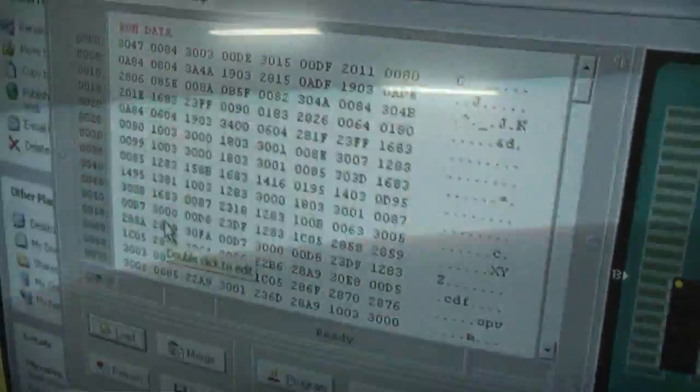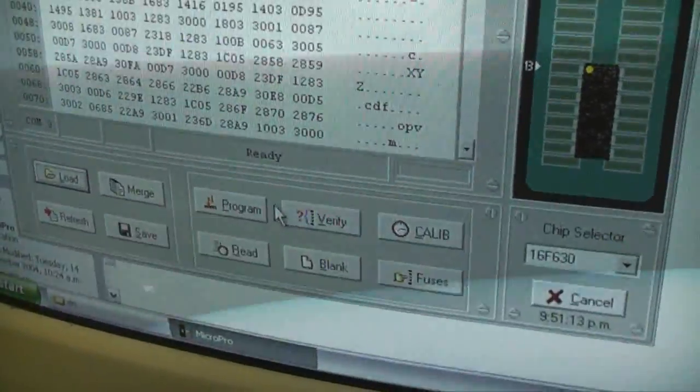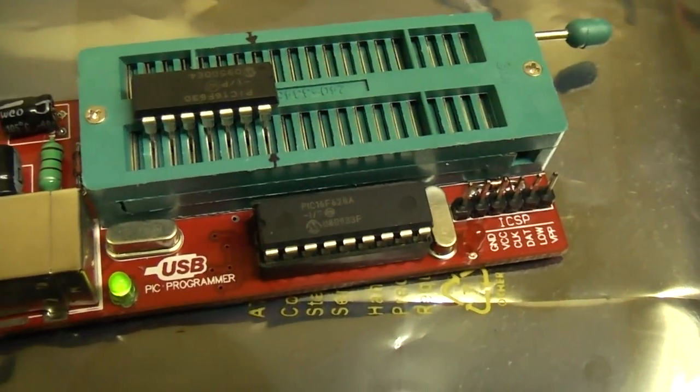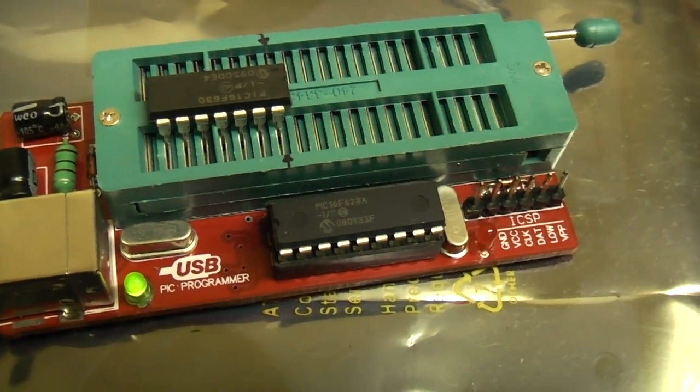Okay, so here's our hex code all ready to go. And pretty much all we need to do is hit the program button. And you'll see that this little light is going to come on. There we go, and it's now programming the chip.